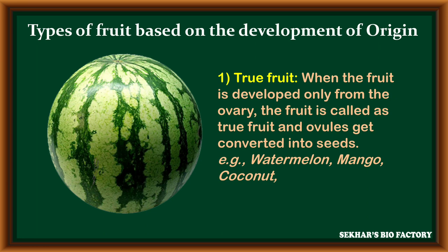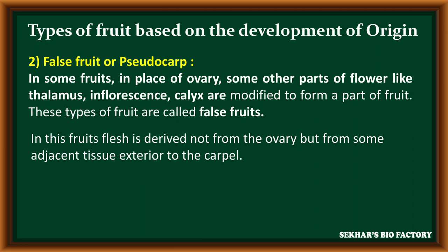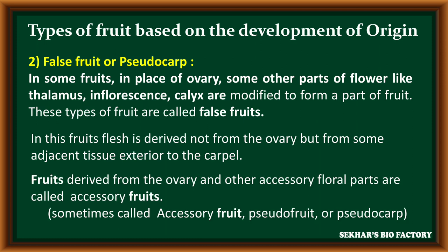True fruits are developed from the fertilized ovary. The second type is false fruits or pseudocarp. In some plants, the fruit is developed from parts other than the ovary, such as thalamus, inflorescence, or calyx. These other parts participate in the development of fruit. The flesh or stored food materials are derived not only from the ovary but also from adjacent tissues exterior to the carpels. The fruits derived from the ovary and other accessory floral parts are called false fruits or pseudocarp.